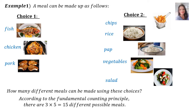According to the fundamental counting principle, there are 3 choices for choice 1 and 5 choices for choice 2. Therefore, 3 times 5 is 15 different possible meals.